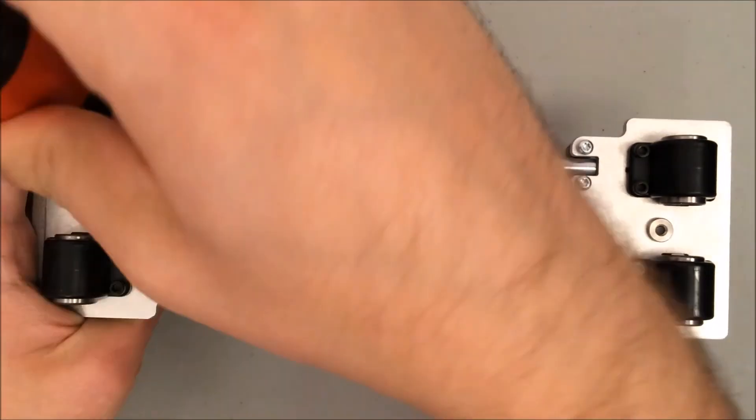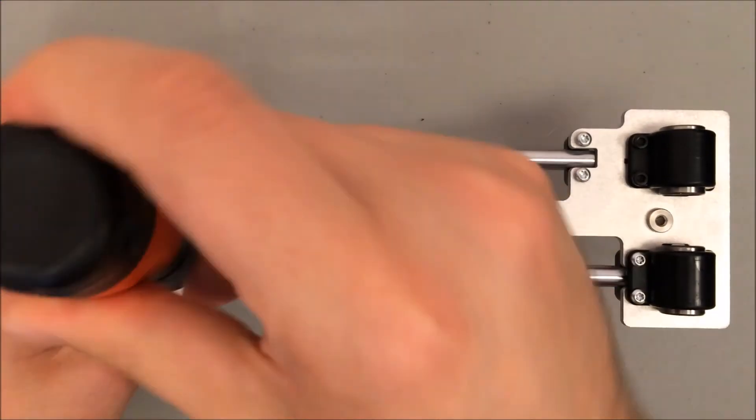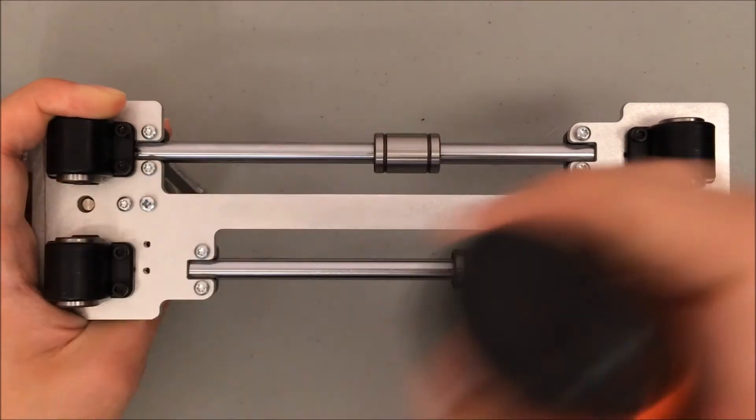All these screws should be tightened until they're firm. Remember that plastite screws thread the plastic that you're feeding them into.